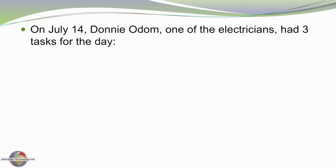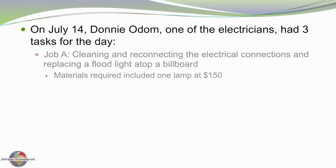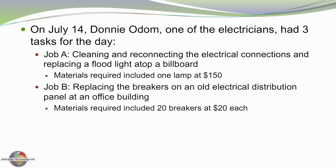Let's look at Donny Odom on July 14th, one of his electricians. Jack gave him three jobs for the day. Job A is to work on a billboard — clean and replace the light bulb and clean the electrical connections. This requires a light bulb costing $150.